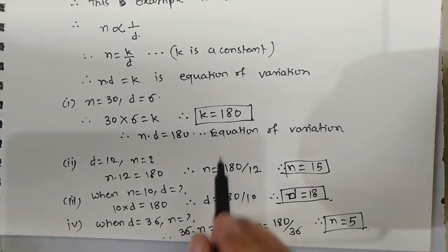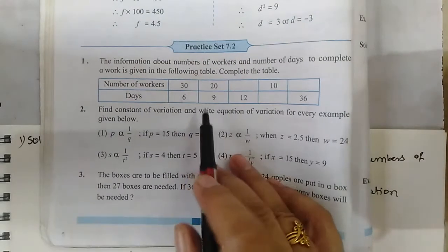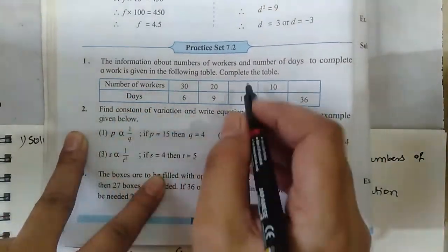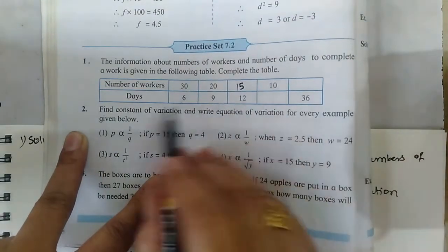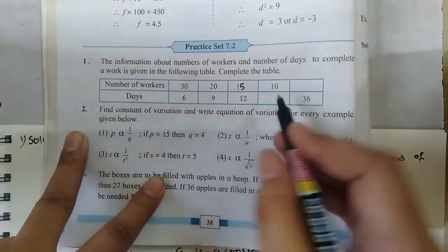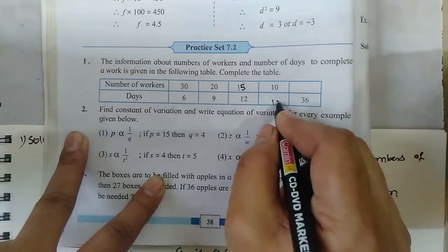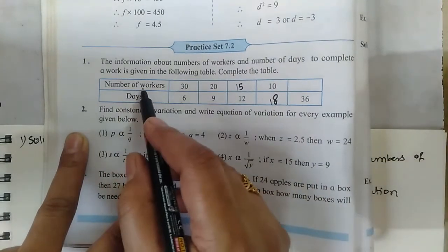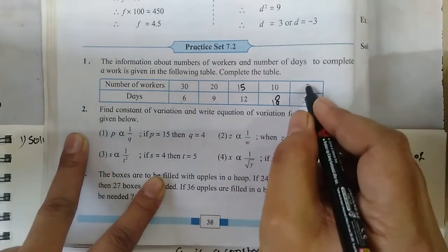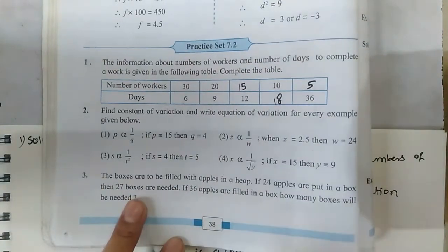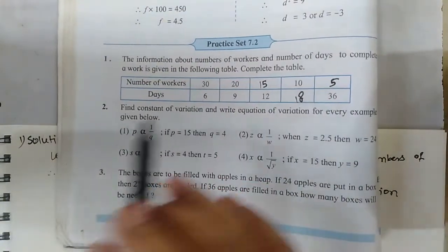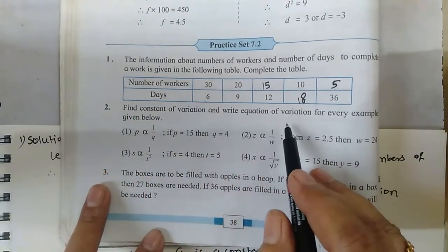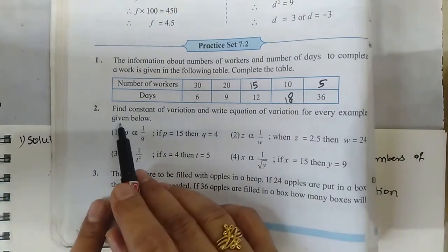Now put all these values in the table. When days are 12, number of workers are 15. When number of workers are 10, then 18 days are required. When number of days are 36, then 5 workers are required. The table is completed. Now, question 2: find the constant of variation and write the equation of variation for every example given below.